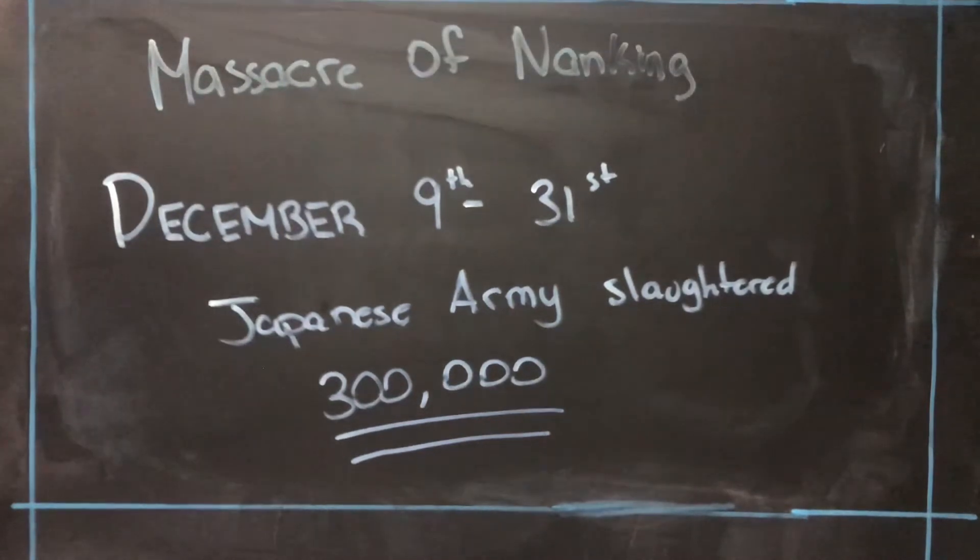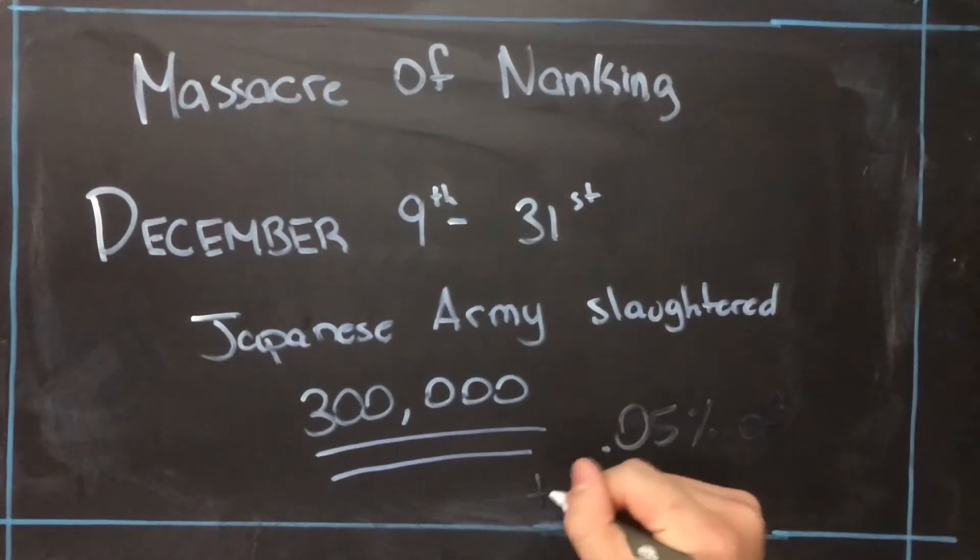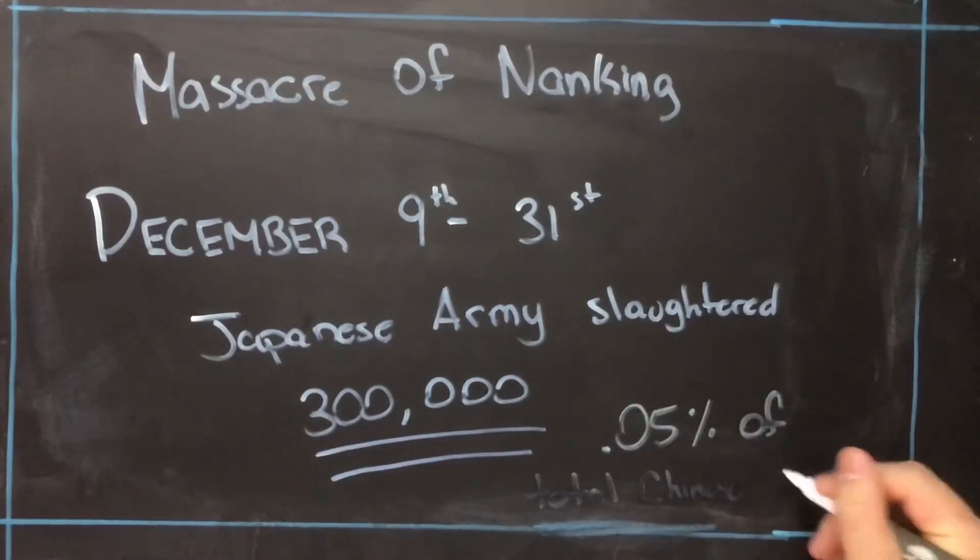The occupation of Nanking lasted until September 2nd, 1945, after the Japanese surrender of World War II.